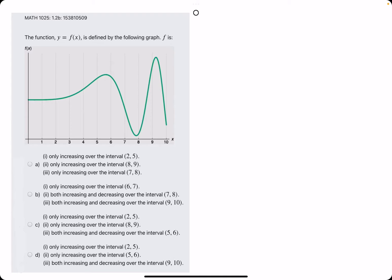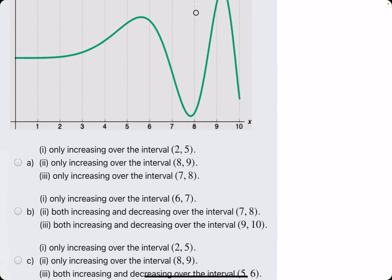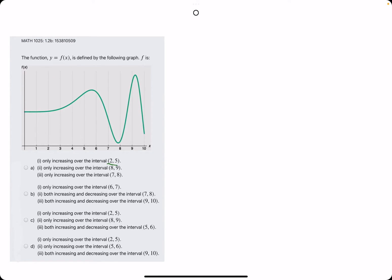So, we are given this function f of x, and the goal is to identify where it's increasing and decreasing. Let's start with option A. They say only increasing over the interval 2 to 5.